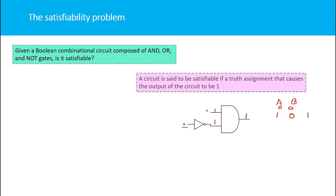When you give a as one and B as zero, you get the output one. So we say that this circuit is satisfiable — that is, if you assign some value to the inputs of a boolean circuit and get the output as one, then we say that boolean circuit is satisfiable.